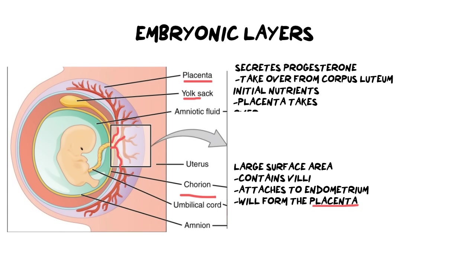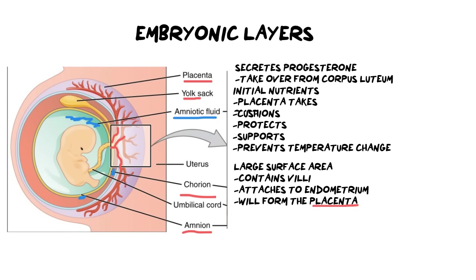Next is the amnion and amniotic fluid. Please don't get confused between the chorion and the amnion — the amnion layer labels on the inside and the chorion label touches the outside. The amnion secretes the amniotic fluid — all that blue liquid surrounding the embryo. The embryo needs to be cushioned, protected, and supported. The amniotic fluid also provides a temperature buffer and acts like a giant airbag, preventing any mechanical damage to the fetus.